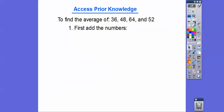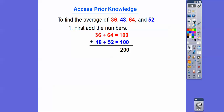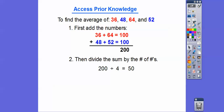Let's go back and review a little bit. To find the average of these four numbers — 36, 48, 64, and 52 — we first add the numbers. I chose to add 36 and 64 together because they give us a compatible number of 100, and 48 plus 52 is another 100, so all four numbers add up to 200. Then we take that sum, 200, and divide it by the number of numbers. So the average of these four numbers is 50.